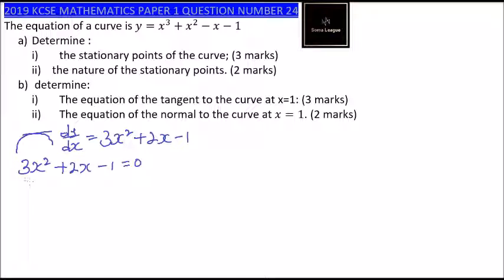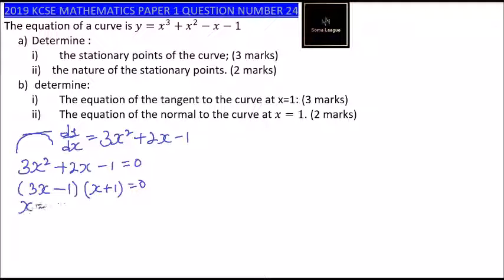We can write it in terms of factors: (3x minus 1)(x plus 1) equals 0, implying that x equals 1/3 or x equals minus 1.